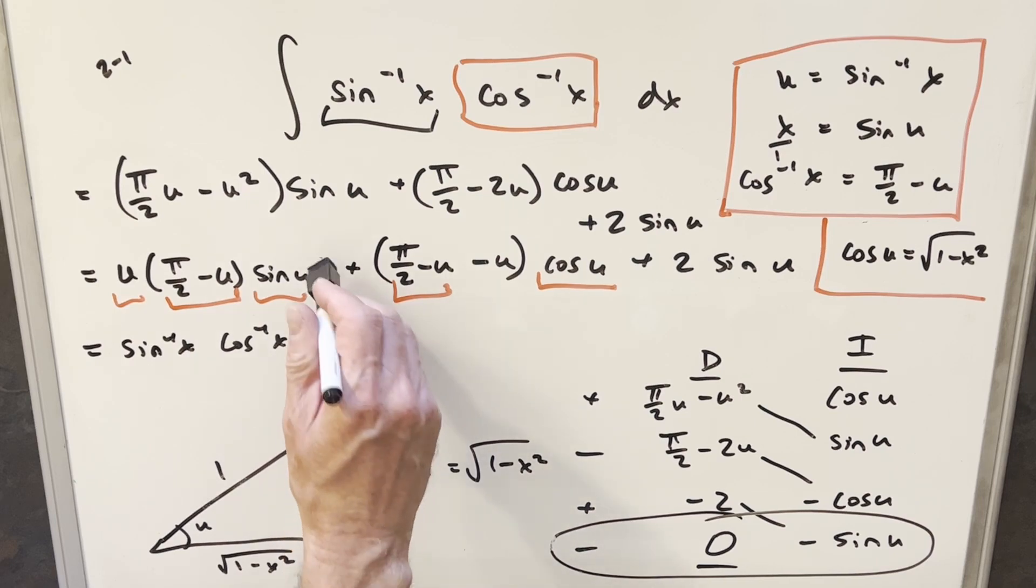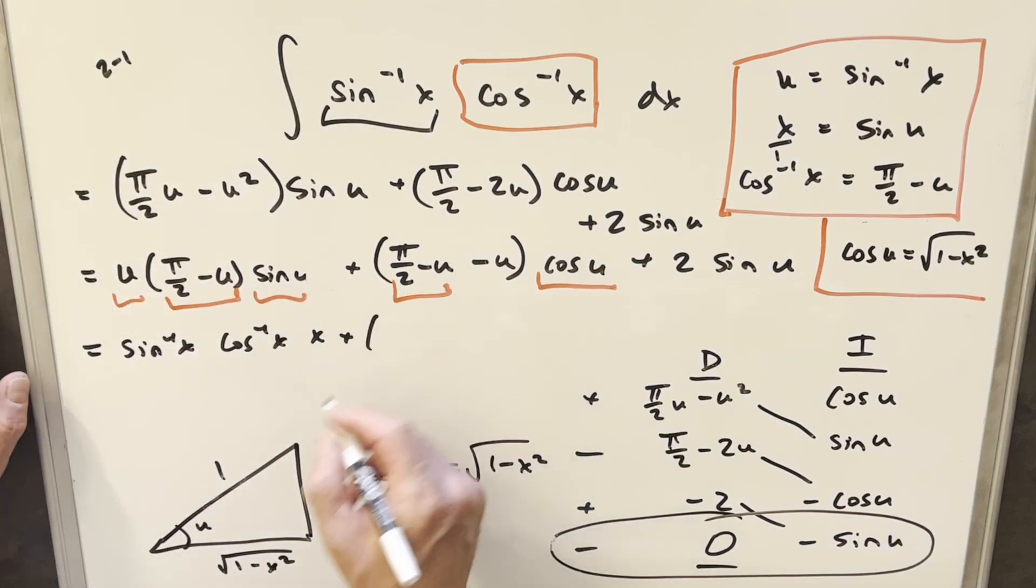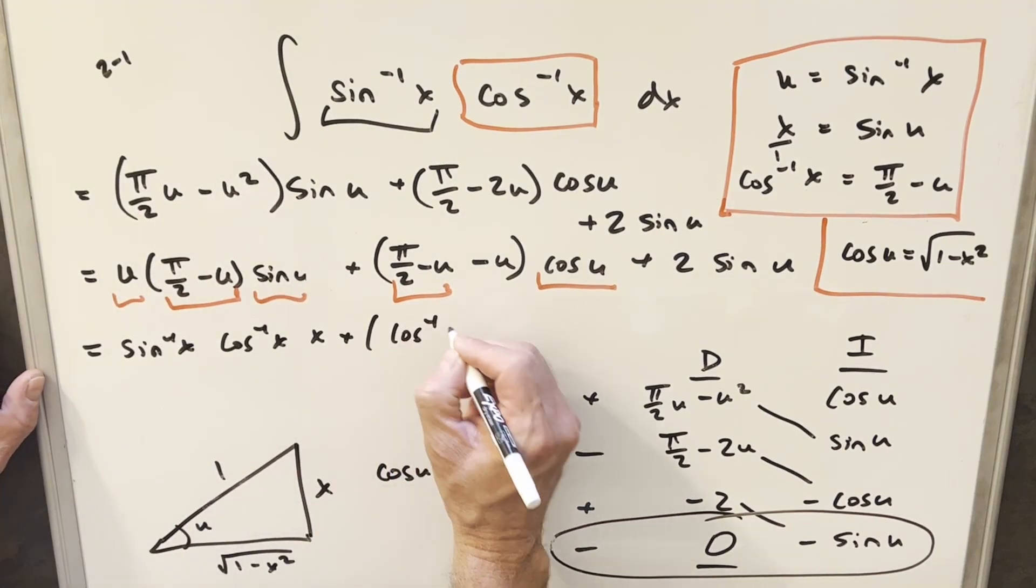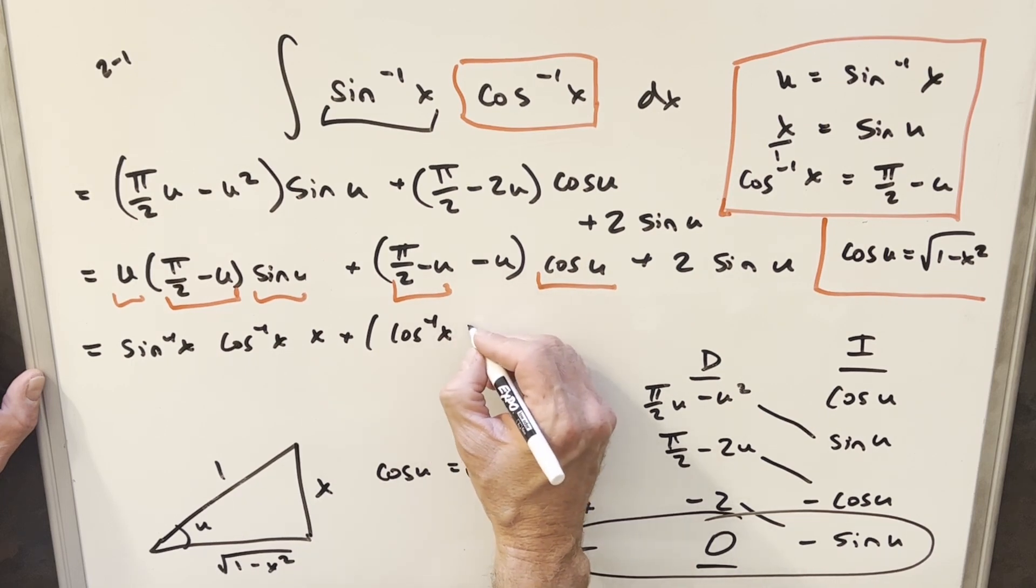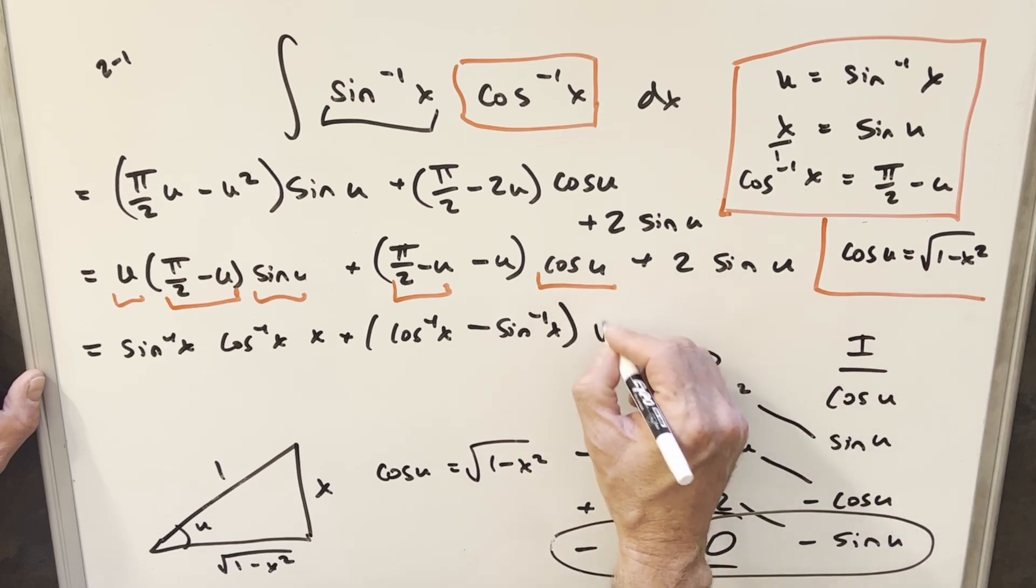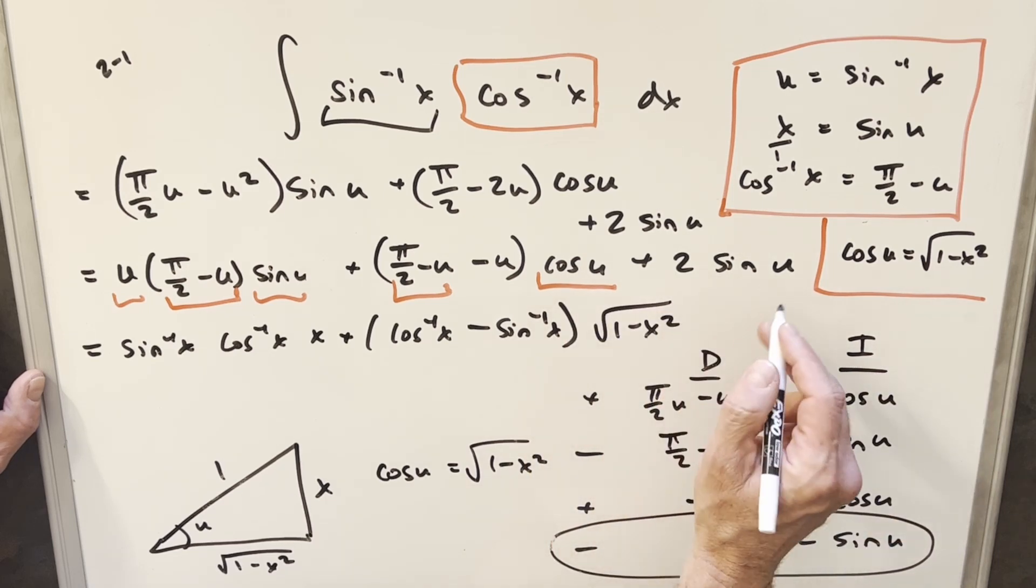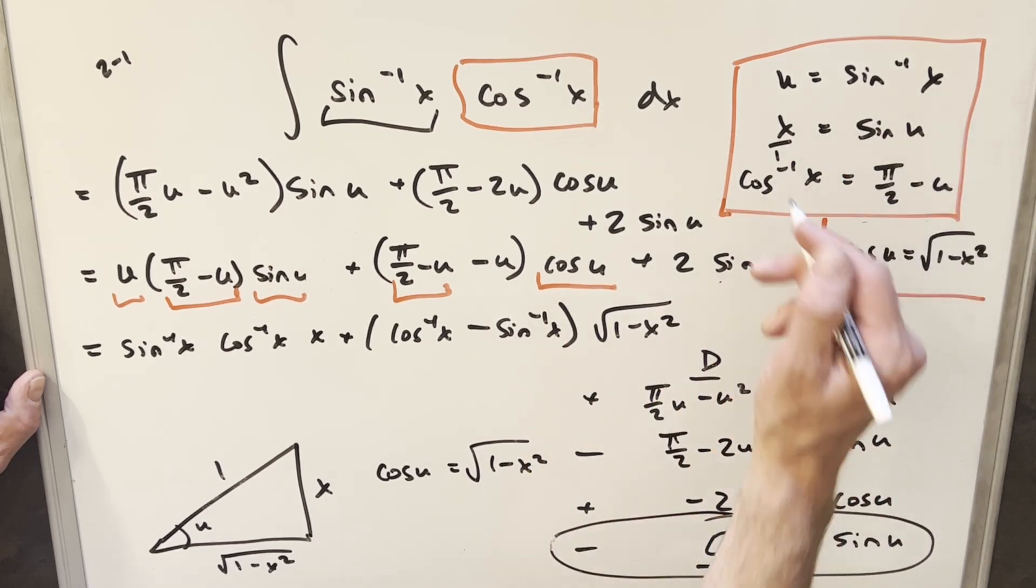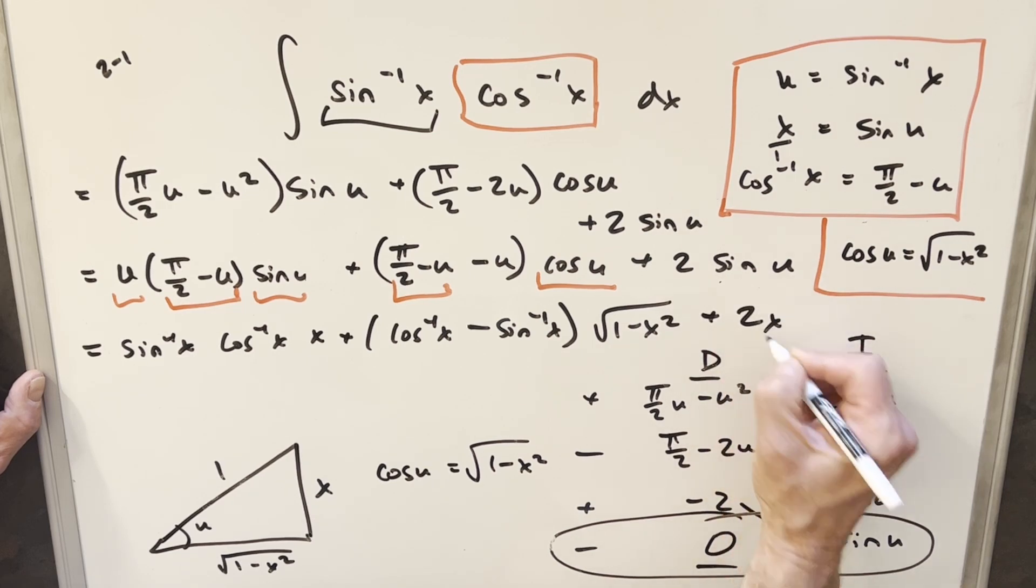I have no idea why I have two pluses there. So we'll get rid of one of those. Again, this is the same thing. This is going to be arccosine. And our u is going to be minus arcsine of x. Cosine of u is going to be this √(1 - x²). And sine u is just x. So this is going to be plus 2x.